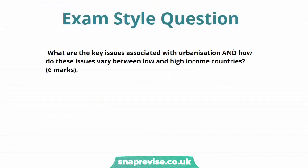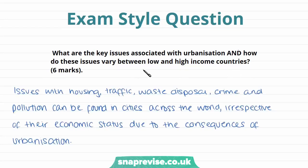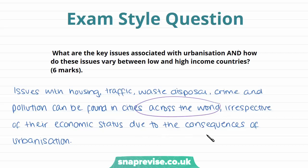To finish off, we're going to look at an exam style question: 'What are the key issues associated with urbanisation? And how do these issues vary between low and high income countries?' Firstly, I'm going to address the differences between low and high income countries, stating that issues with housing, traffic, waste disposal, crime and pollution can be found in cities across the world, irrespective of their economic status due to the consequences of urbanisation. This is my initial statement outlining the different factors I'm going to be talking about.